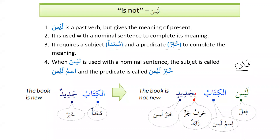In a nominal sentence like الْكِتَابُ جَدِيدٌ — the book is new — الْكِتَابُ is مُبْتَدَأ and جَدِيدٌ is خَبَرٌ. But when we say لَيْسَ الْكِتَابُ بِجَدِيدٍ — the book is not new — لَيْسَ is the verb, الْكِتَابُ becomes إِسْمُ لَيْسَ, and جَدِيد becomes خَبَرُ لَيْسَ. However, there is an addition of the letter بَا (حَرْفُ جَرٍّ زَائِدٌ) as we can see. In modern standard Arabic or other than the Quran, we call this extra بَا.